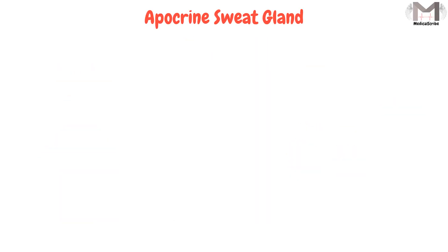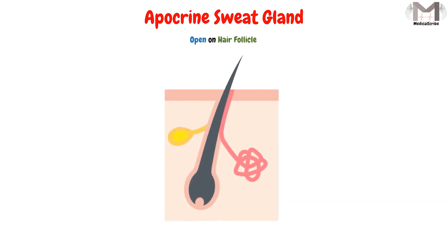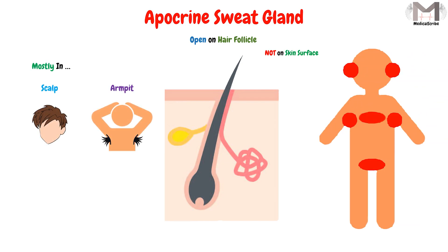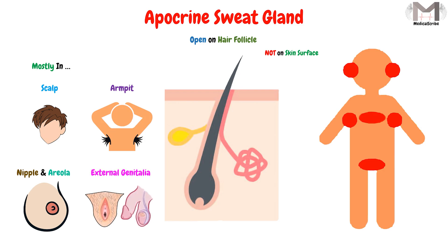The apocrine sweat glands open on the hair follicle, not on the skin surface. We find them mostly in the scalp, the armpit, the nipple and areola, and in the external genitalia.